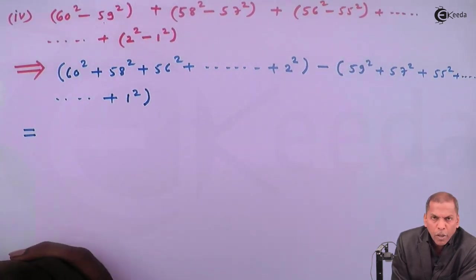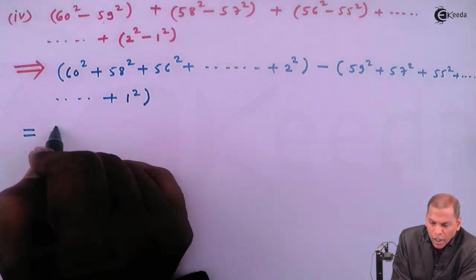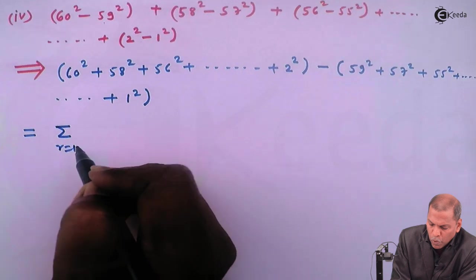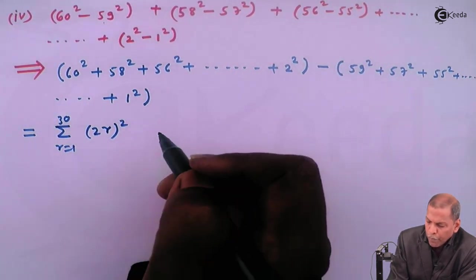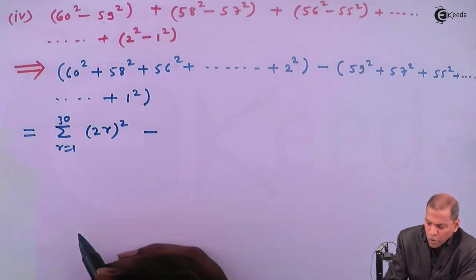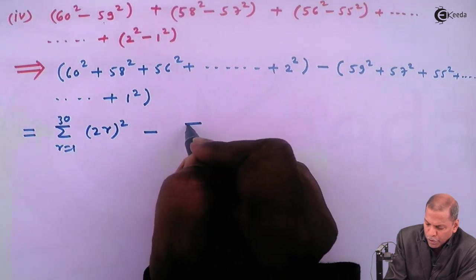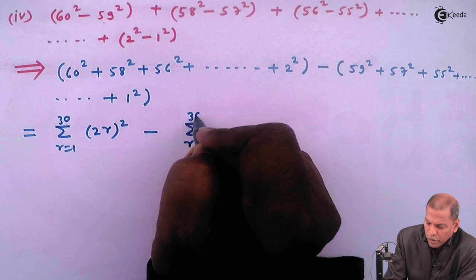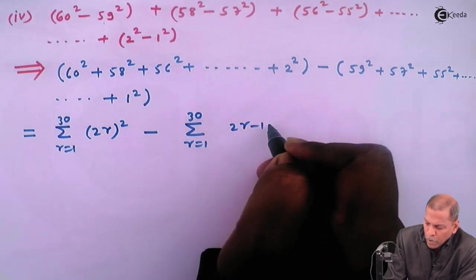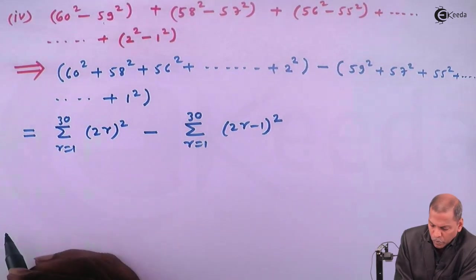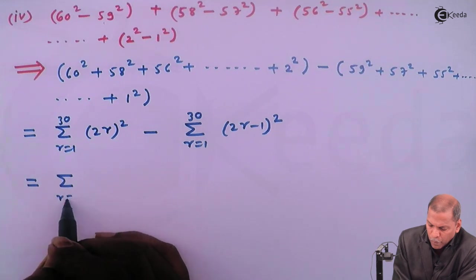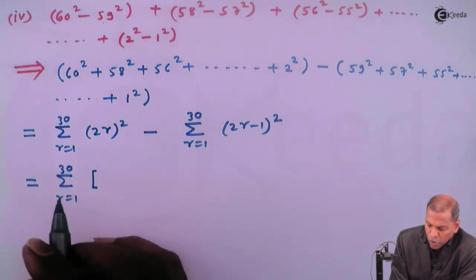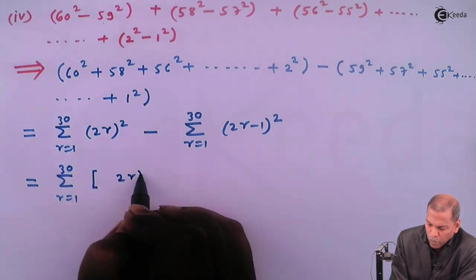If you observe the terms in the first bracket, they are all even terms. So that can be written as summation of (2r)² for r from 1 to 30. Then minus, and if you observe the terms in the second bracket, they are all odd. So for them we write summation for r from 1 to 30 of (2r minus 1)². Taking summation common, we have summation r from 1 to 30 of the bracket: (2r)² minus (2r minus 1)².